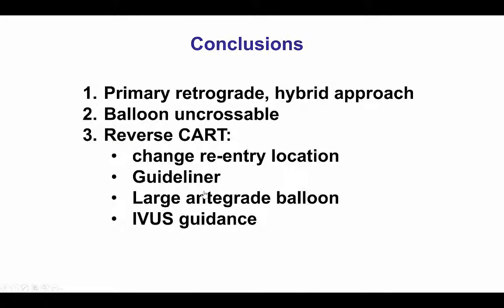In summary, this case demonstrates several potential difficulties with the retrograde approach. First, in cases with ambiguity of the proximal cap and a distal cap at the bifurcation, a primary retrograde may be useful. Second, in heavily calcified vessels, it may be hard to deliver a balloon, and it is important to have an algorithm for crossing step-by-step. Third, reverse CART can be challenging but can be facilitated by changing the re-entry location, sometimes using a guideliner as the target for the retrograde wire. Most importantly, using an appropriately sized balloon is critical, and IVUS can help upsize the balloon without risking rupture of the proximal vessel — which is exactly what happened in this case.